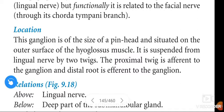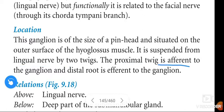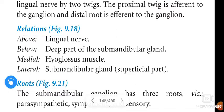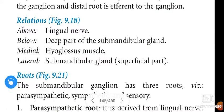The submandibular ganglion is the size of a pinhead and is situated on the outer surface of the hyoglossus muscle. It is suspended from the lingual nerve by two roots: the proximal root is afferent to the ganglion and the distal root is also afferent to the ganglion.